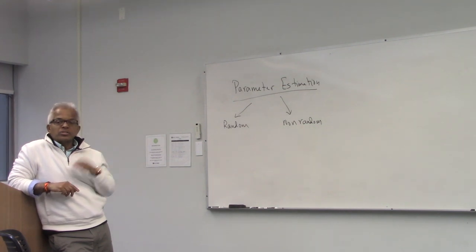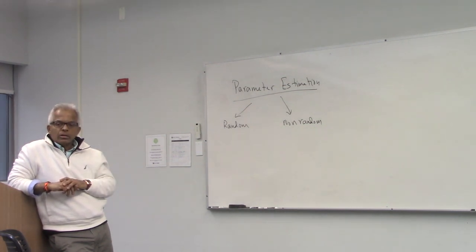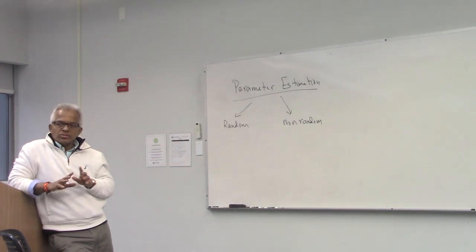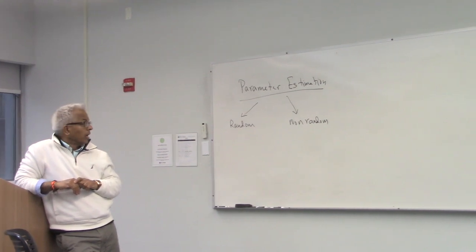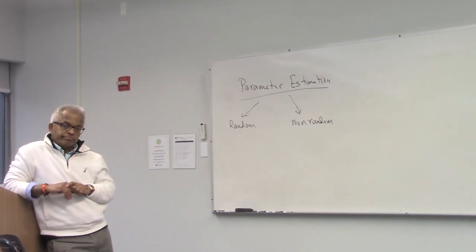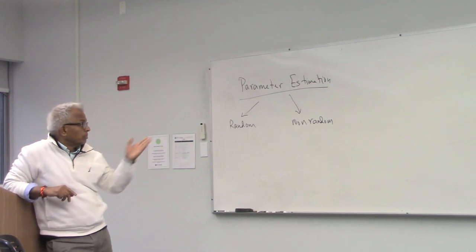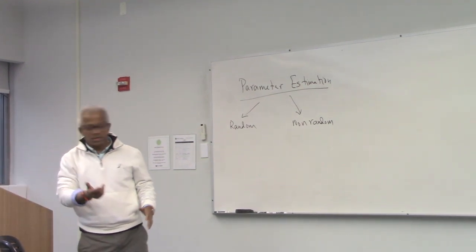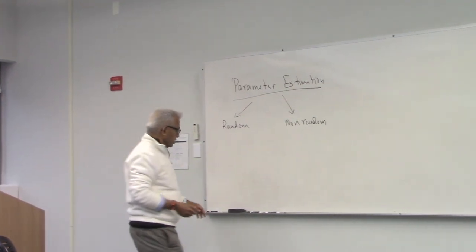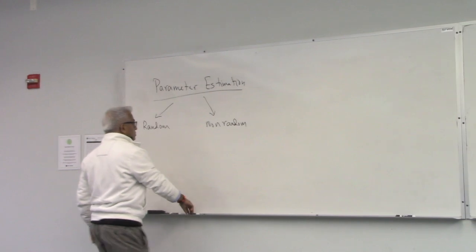In terms of parameter estimation, we will consider two cases: random parameters and non-random, but of course unknown — because if it is known, then there is nothing to do. So here it is unknown.